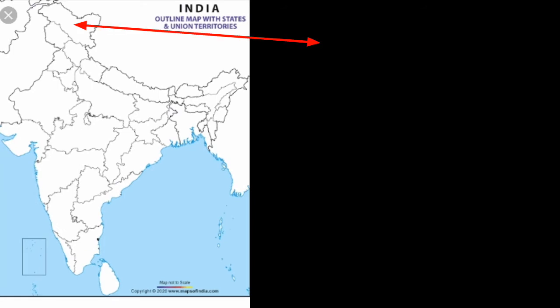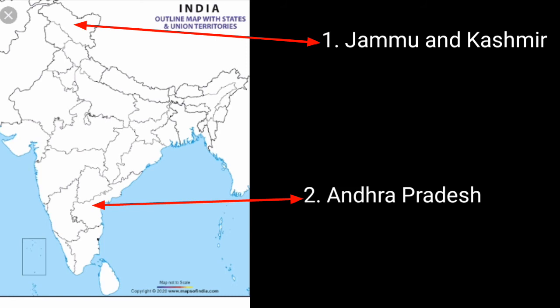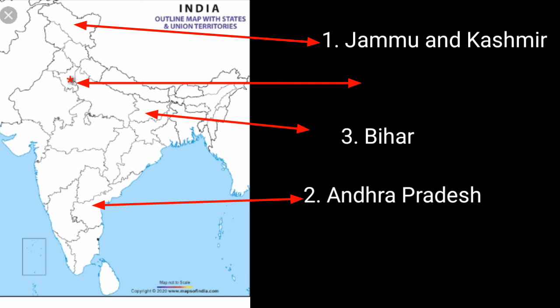Look at the map — you have to color those portions yourself. First, color Jammu and Kashmir. Second, color Andhra Pradesh. Third, color Bihar, which provides labor to other agricultural states. For the fourth, you may write Mumbai, Chennai, or any other industrial or metropolitan city that attracts migrants and laborers to work there.